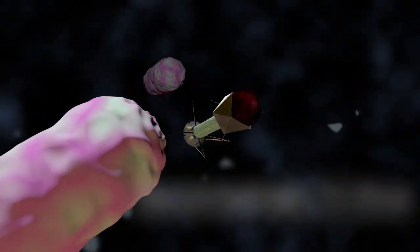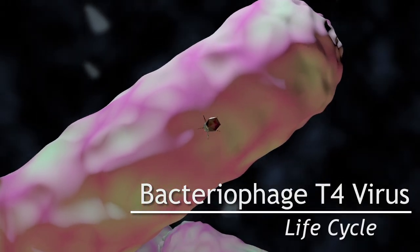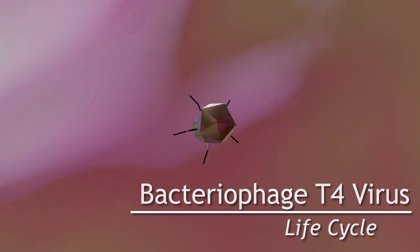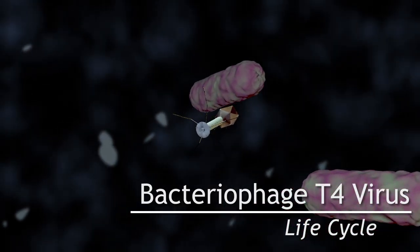The T4 phage initiates infection of an E. coli bacterium by recognizing cell surface receptors of the host with its long tail fibers.